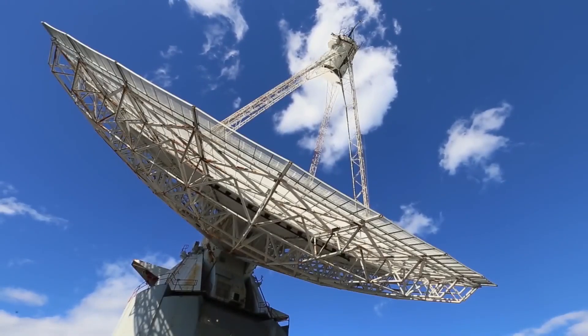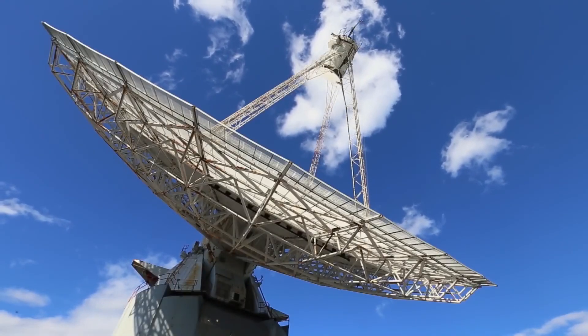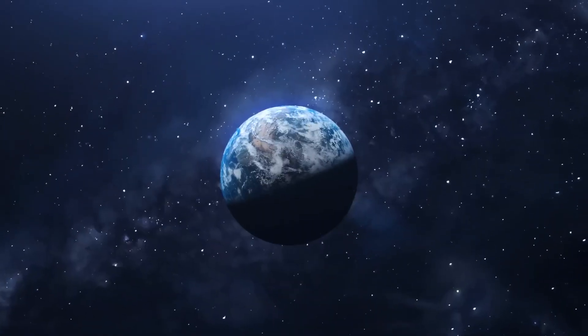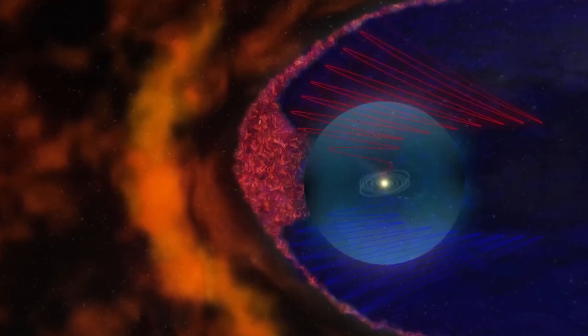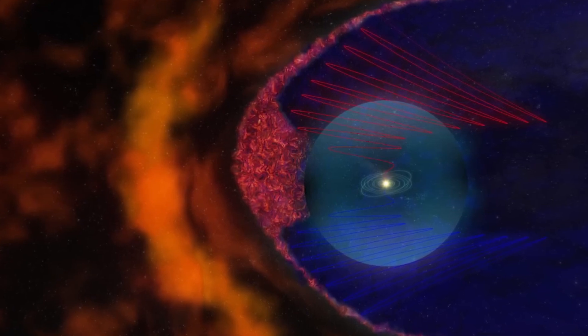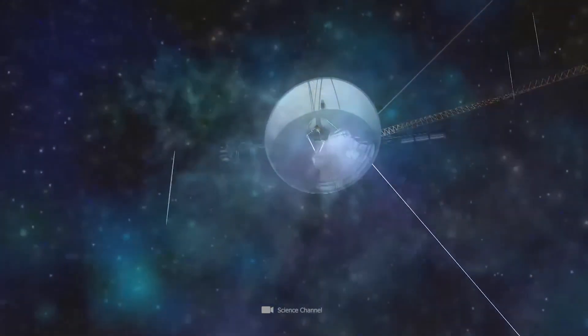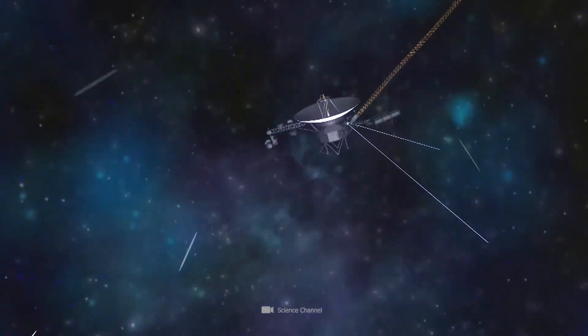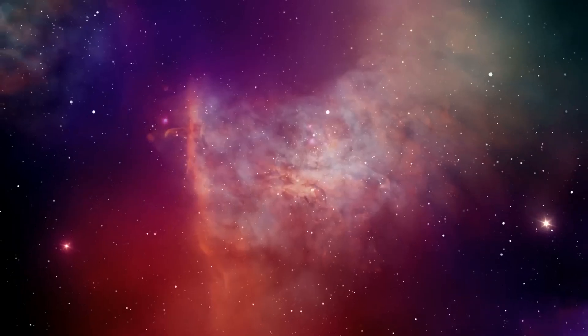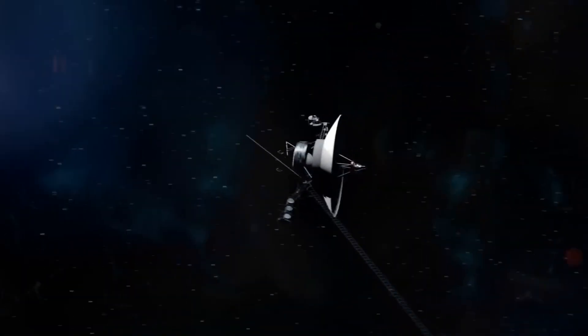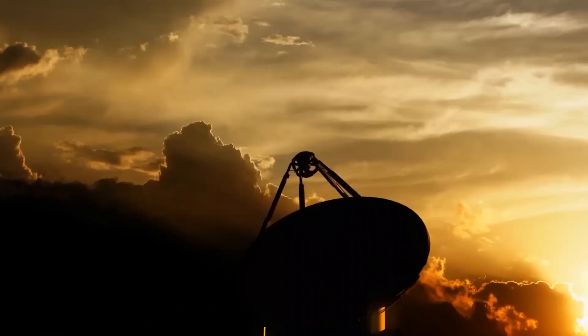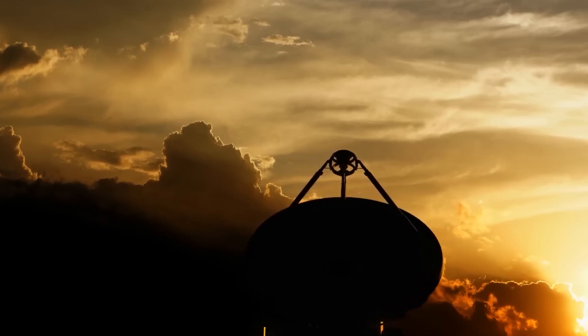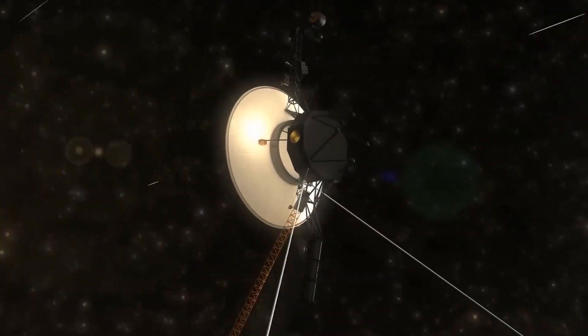The Voyager mission team was also closely monitoring any changes in the prevailing magnetic field as the spacecraft moved into the interstellar medium, an environment composed of ionized gases and influenced by nearby stars. The interstellar magnetic field was expected to be oriented differently compared to that of the heliosphere. However, the Voyager probes did not detect any significant changes in the magnetic field.